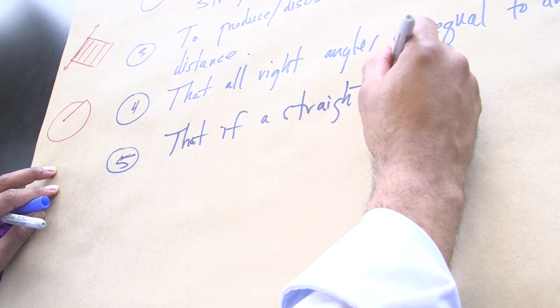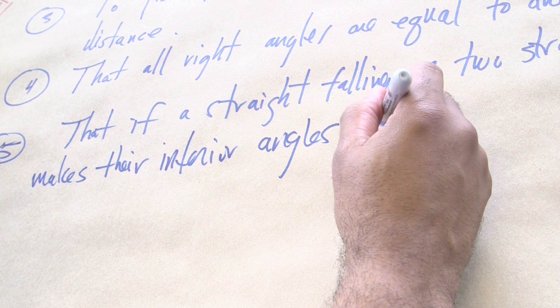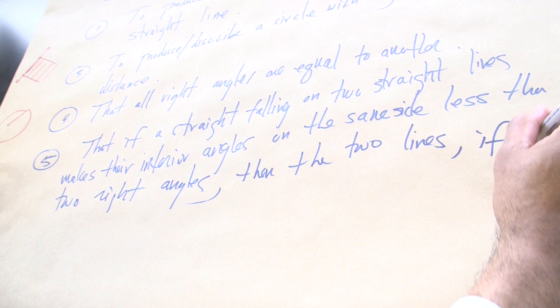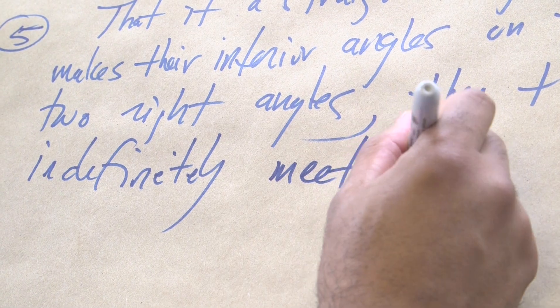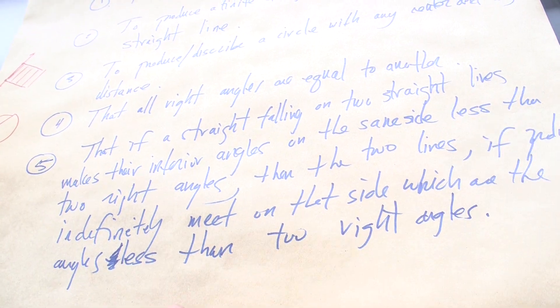We've got four. Now we're coming to the fifth — this is the one that we should be paying attention to. So here comes the fifth postulate. Let's write it down the way Euclid wrote it and then we'll decide for ourselves what it means. That if a straight line falling on two straight lines makes their interior angles on the same side less than two right angles, then the two lines if produced indefinitely meet on the side with the angles less than two right angles. It's not catchy, is it? No. There are a lot of words.